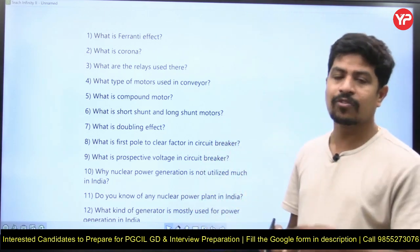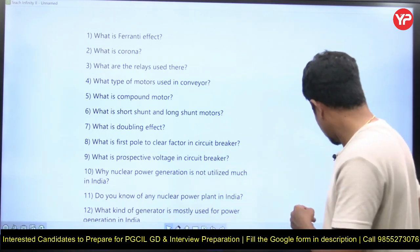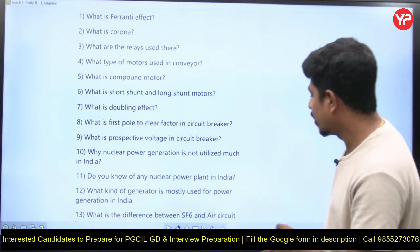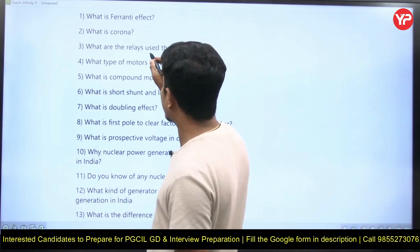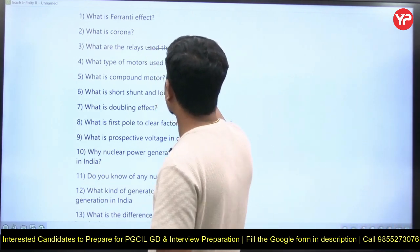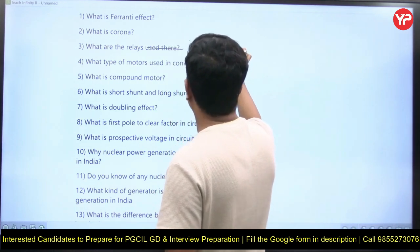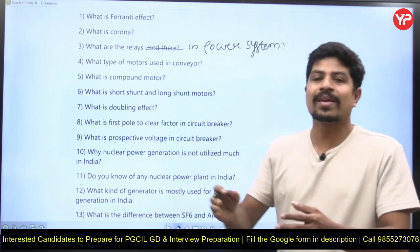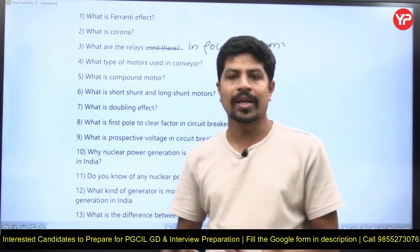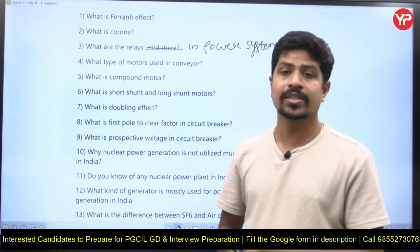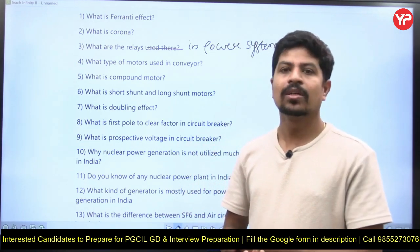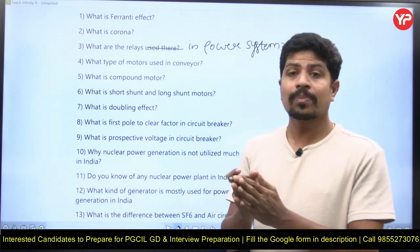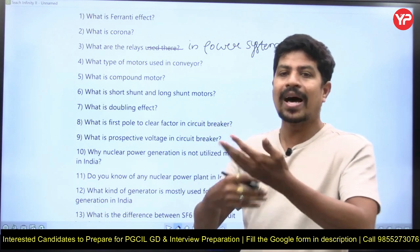The second question is: what is corona — what is electrical corona? Then: what are the various relays used in power system? There are many types of relays. You may name over-current relay or voltage relay. For protection of transmission lines — reactance relay, mho relay, admittance relay, impedance relay. Mho relay and admittance relay are the same as impedance relay. You keep answering and they ask further questions from your answers.